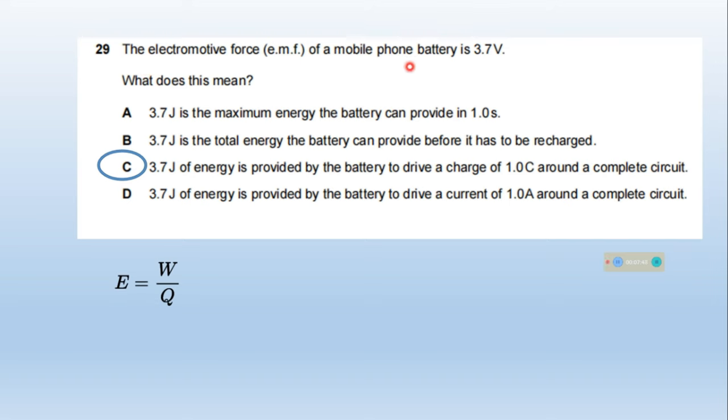The electromotive force EMF of a mobile phone battery is 3.7 volts. What does this mean? Electromotive force is defined as W by Q, where W is the work done and Q is the charge. To drive a 1 coulomb charge around a complete circuit, 3.7 joules of work has to be done. Option C is correct.